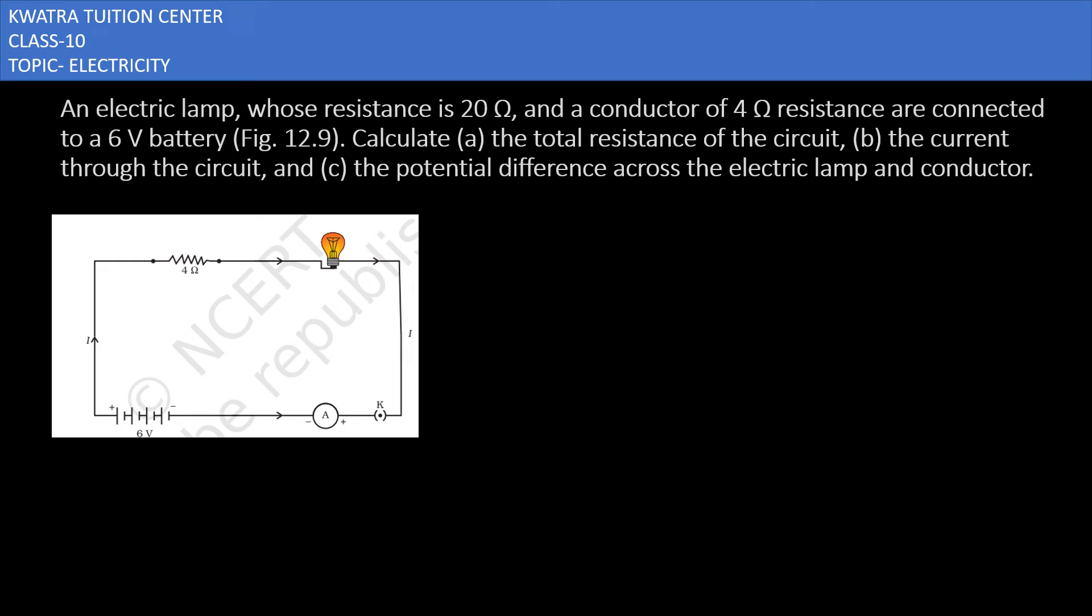Let's start with the 16th question. It says an electric lamp whose resistance is 20 ohm and a conductor of 4 ohm resistance are connected to a 6-volt battery. Calculate the total resistance of the circuit. So what we do is find the total resistance of the circuit and you can see here is 4 ohm resistance and this is 20 ohm resistance.